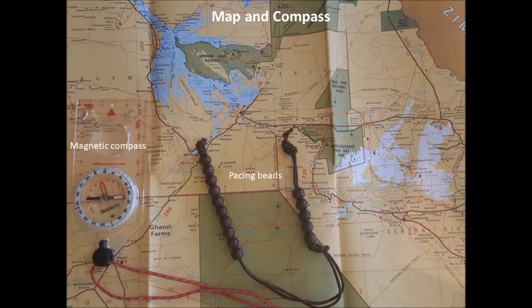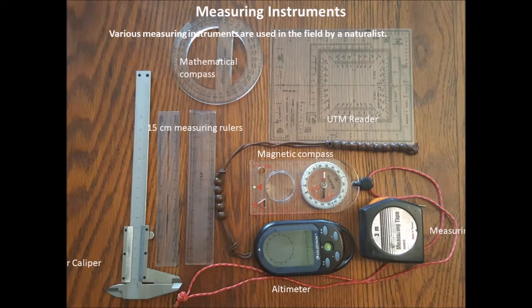The map and compass are obviously essential. You want a good road map or at least a topographical map of the area you're in. A magnetic compass is needed for finding direction, and pacing beads are useful if you're on foot and want to measure distances covered. A map is definitely essential for getting out there and finding your way around. A GPS is another option, but signals are not always good, so it's always worth knowing how to use a compass and map.